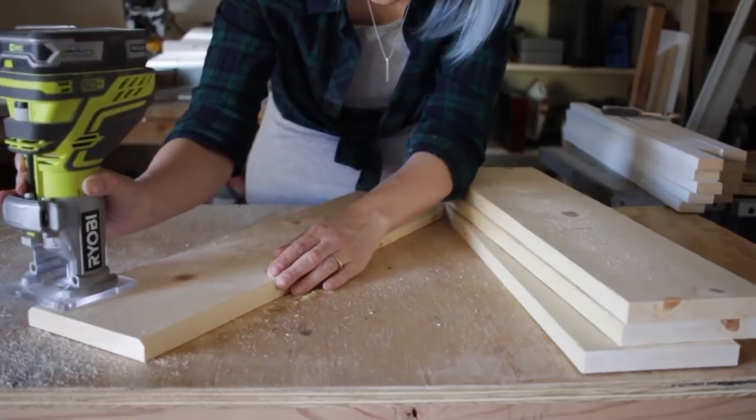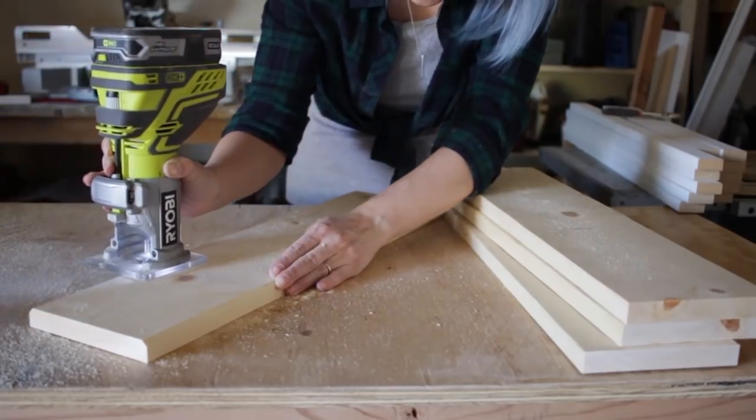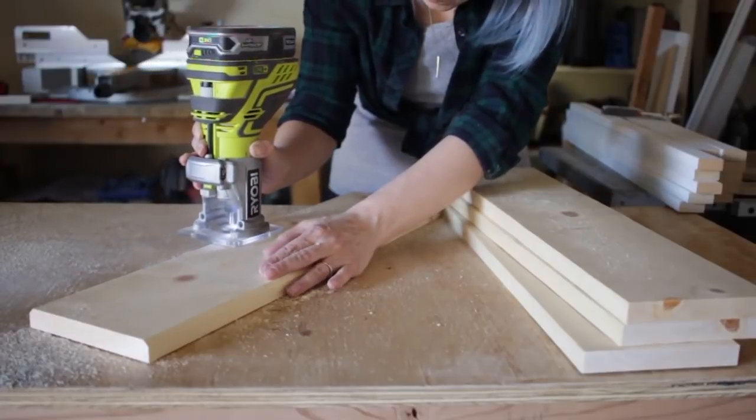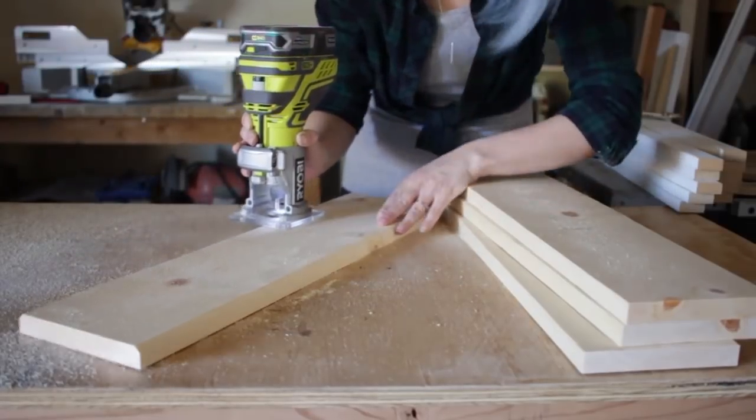I wanted to mimic the look of traditional Sho Sugi Ban siding, so I decided to give the edge of each board a little chamfer using my trim router.